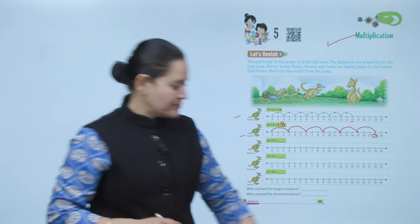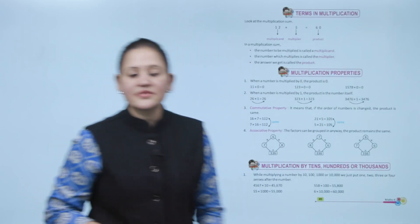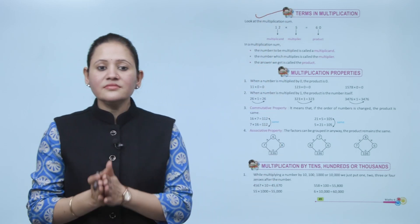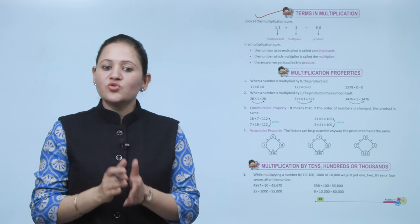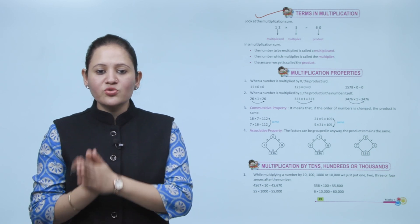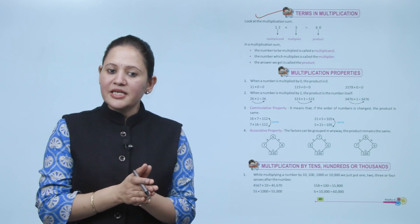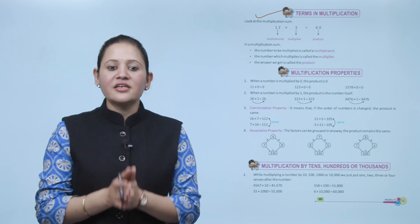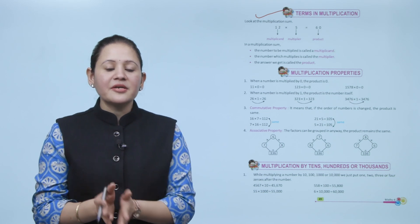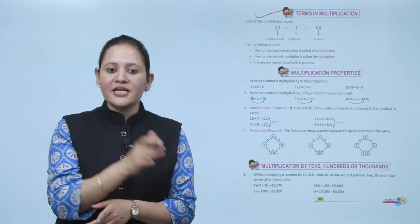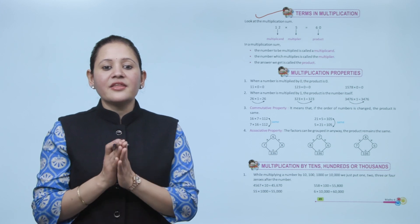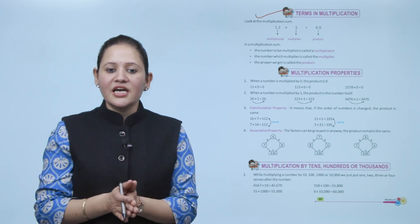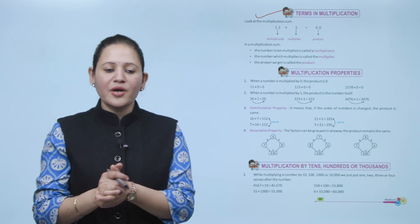Next, terms in multiplication. Look at the multiplication sum: 12 into 5 equals 60. Here, 12 is the multiplicand and 5 is the multiplier, and 60 is the product. The number to be multiplied is called the multiplicand, the number by which we multiply is called the multiplier, and the answer we get is called the product.